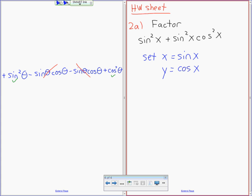What's that going to change my equation into? If I replace every time I see a sine x, I change it to an x. What's sine squared going to be then? X squared. So what's sine squared x going to be? X squared. And what's cos squared x going to be? Y squared. Now this for me is easier to factor. How would you factor this now? X squared plus x squared y squared. How do you factor something with only two terms? Common factor. What's common between x squared and x squared y squared? X squared. Good. So what's left inside the brackets? One plus y squared.